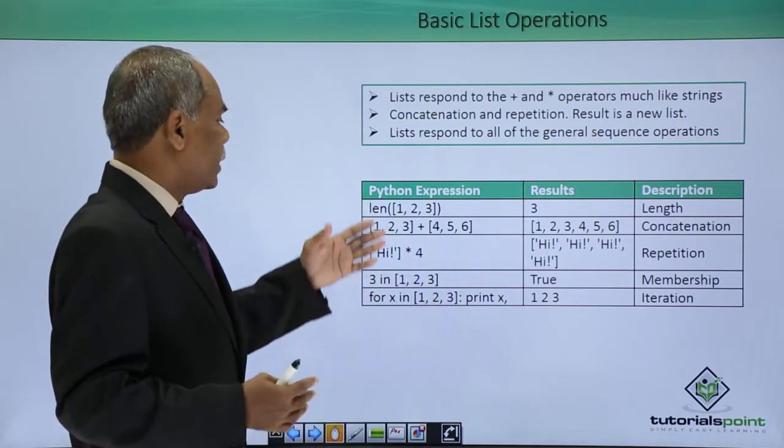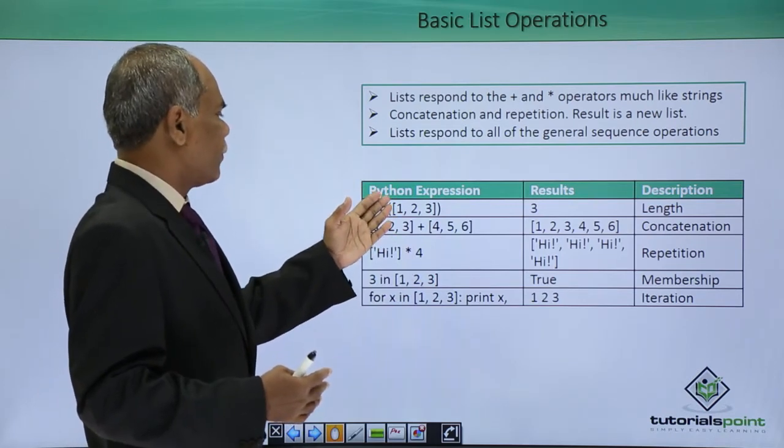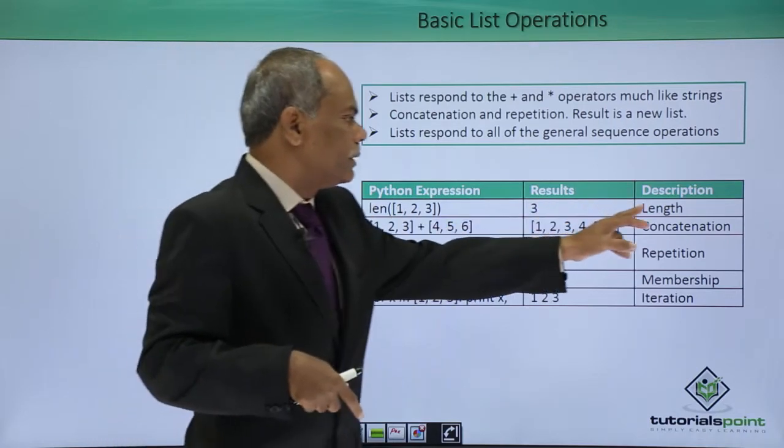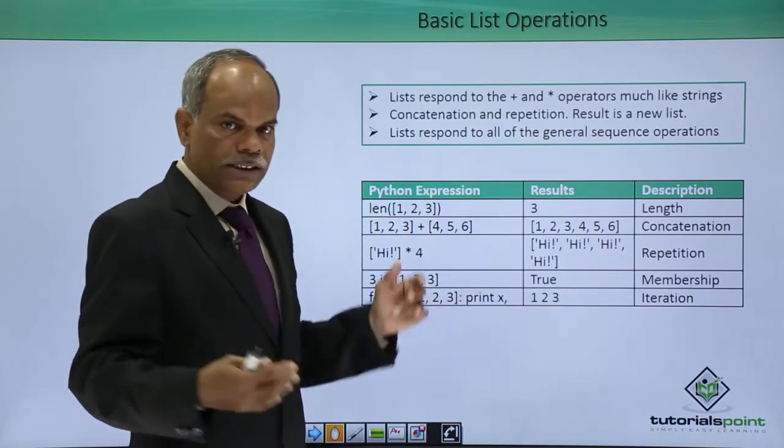Here, len of the square bracket contains 1, 2, 3. Len function will give me the length of that particular list object which is equal to 3 in this case.